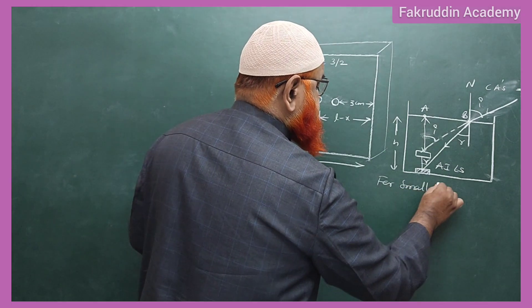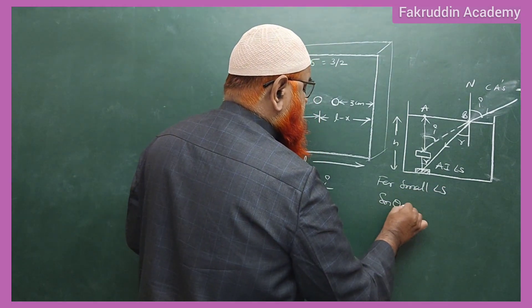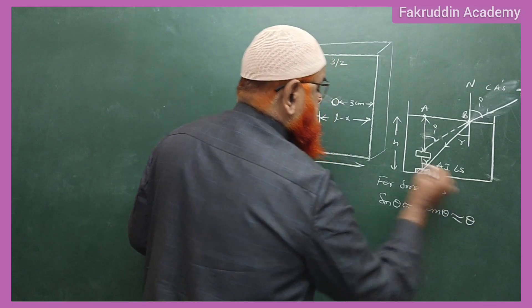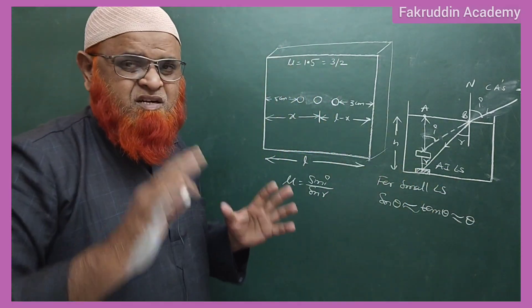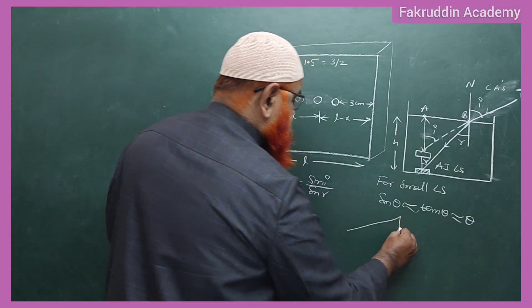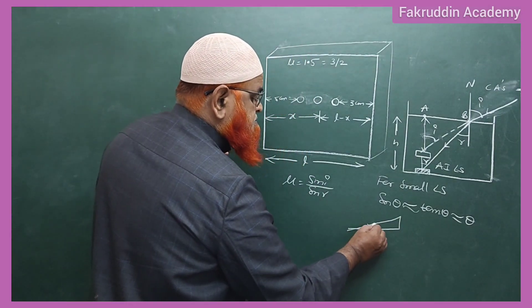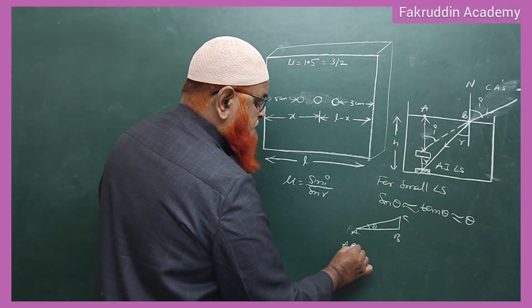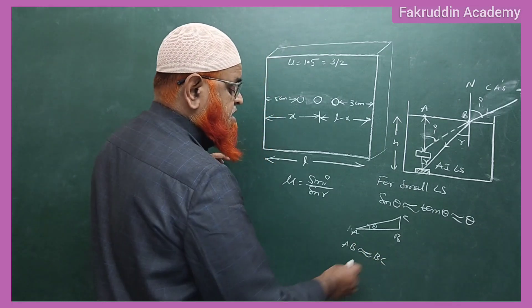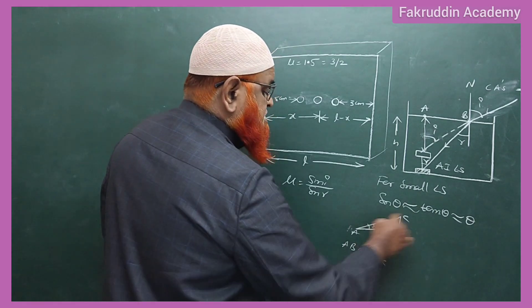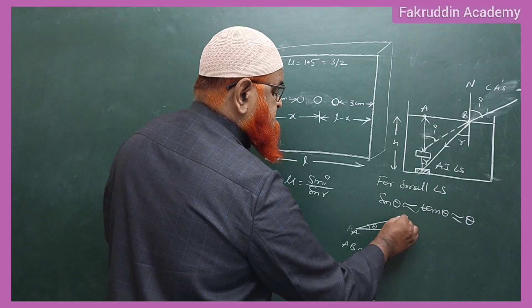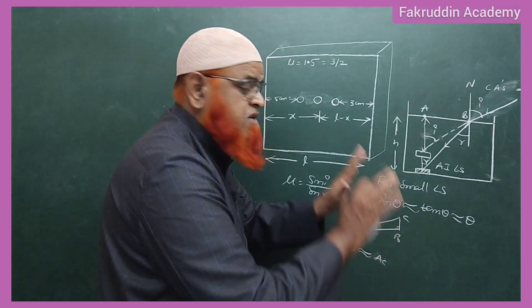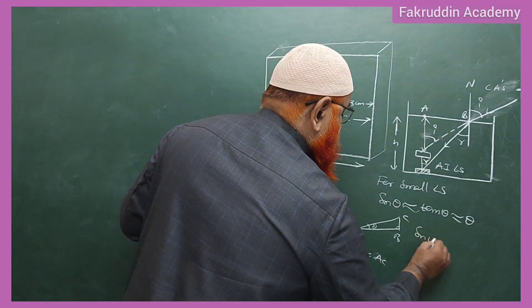For small angles, sine theta is approximately equal to tan theta, which is approximately equal to theta. Let me discuss why. For a very small angle theta, with triangle ABC, AB will be approximately equal to AC. For small right angle triangles with steeper angles, AB and BC will be almost the same.